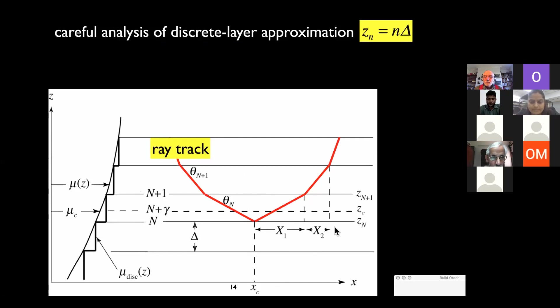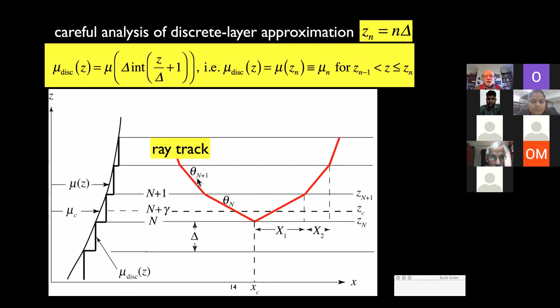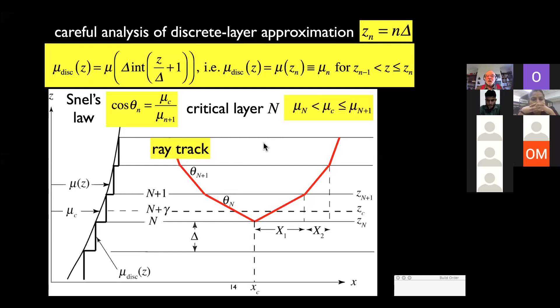So you have these different layers at discrete heights. This is a discrete model of this continuous refractive index at intervals of n delta. And in particular, you've got Snell's law, which governs the ray track, refractive index times the angle cosine is constant at every refraction. And there's a critical layer, which is the layer where you would have horizontal motion. This depends on exactly how you choose the stratifications.